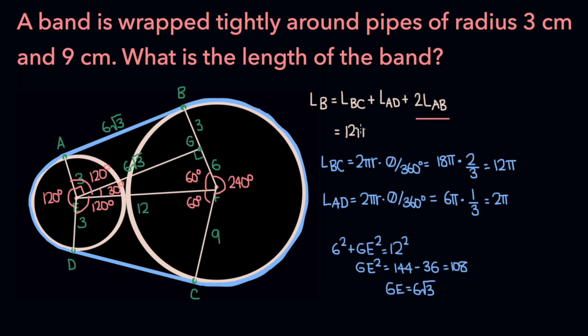And so the length of the band is going to be the sum of those values, so 12 pi plus 2 pi plus 2 times 6 root 3, which is 14 pi plus 12 root 3. And so the length of the band is 14 pi plus 12 root 3 centimeters.